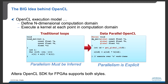The big idea behind OpenCL is its execution model. With OpenCL, we can define an N-dimensional computational domain and execute a kernel at each point in that domain. For example, if we want to multiply two vectors, we can use a for loop to perform element-wise multiplication. Although we know each individual element pair can be multiplied in parallel, this parallelism is not specified in the for loop.